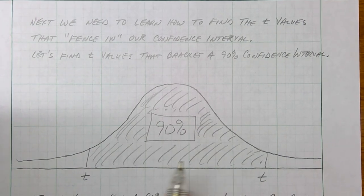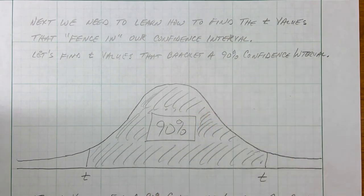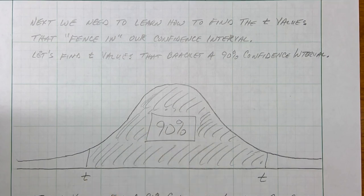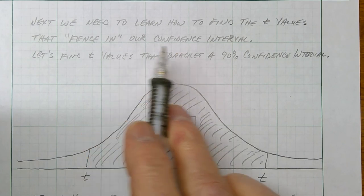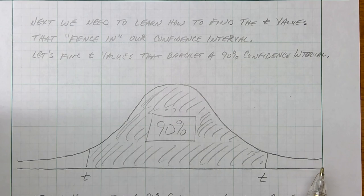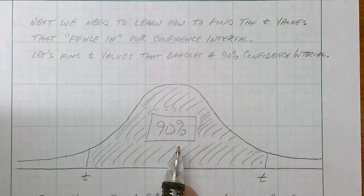Now, one other thing we need to do before we can calculate a confidence interval is learn how to find t-values. When you know sigma, you look on the z-table for the z-scores matching your confidence interval. With t-values, it's similar — a t-distribution looks a lot like a standard normal curve. I'm still going to find a negative t and a positive t that bracket a 90% area, it's just a little trickier.